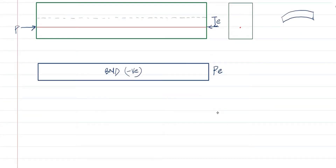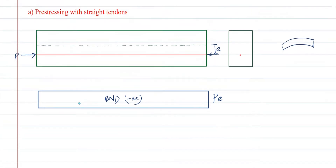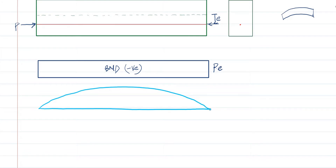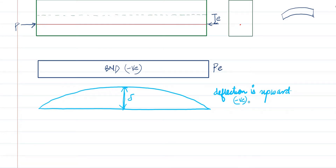If I draw the elastic deflection curve due to this bending moment, the beam is going to bend in the upward direction. This will be the maximum deflection, and the deflection is upward — that's why we take it as negative. Usually, downward deflection is taken as positive and upward deflection as negative.